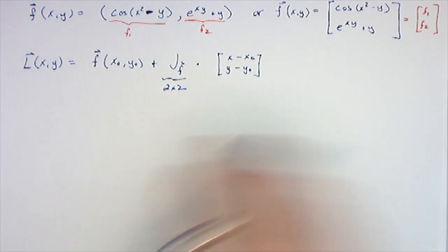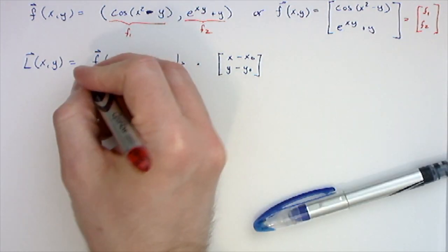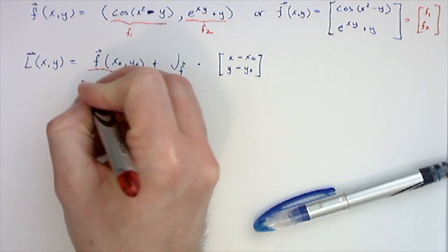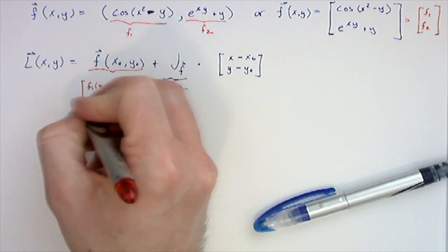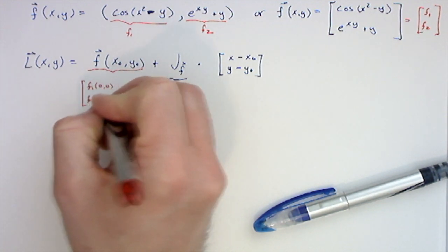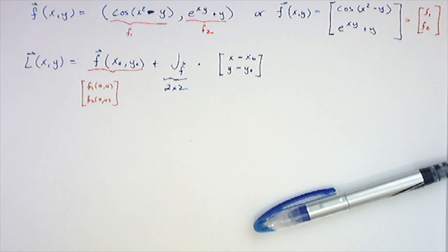This here is going to be the vector [f1 at (0,0), f2 at (0,0)] plus the Jacobian, which is the matrix of the partials. You can also think of it as the gradients as rows.